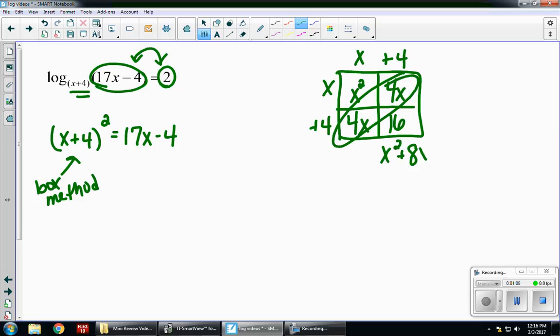x squared, plus 8x, plus 16. So, that's my left side. And it's equal to 17x minus 4.